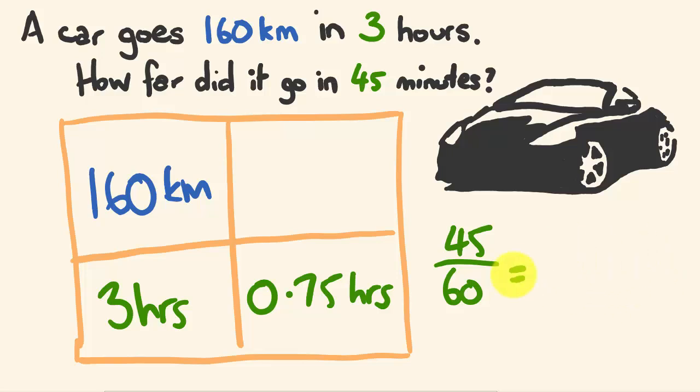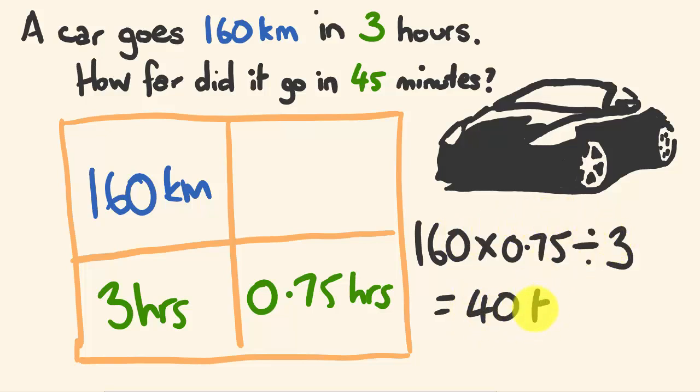And then what we're going to do is we're just going to treat this exactly like every other one we've done. We're going to multiply the diagonals and divide by this one here. So we're going to get 160, we're going to times it by 0.75, and then we're going to divide. So we've multiplied these, we're going to divide by this 3 here. So 160 times 0.75, or three quarters of 160. A quarter of 160 is 40. Three quarters is 120. 120 divided by 3, this is 40 kilometers.